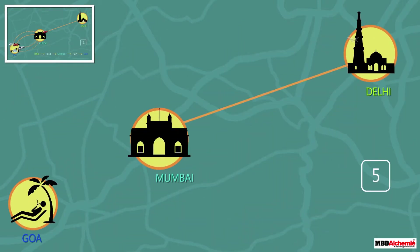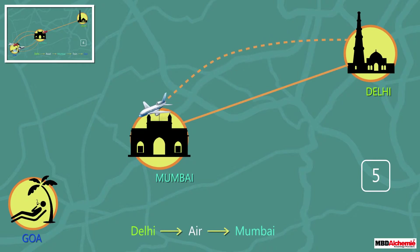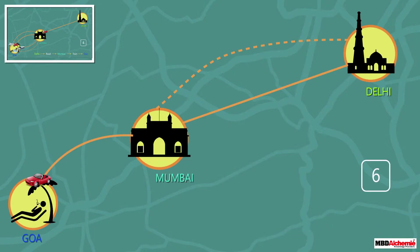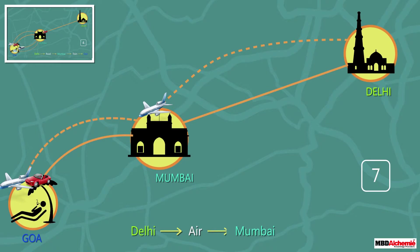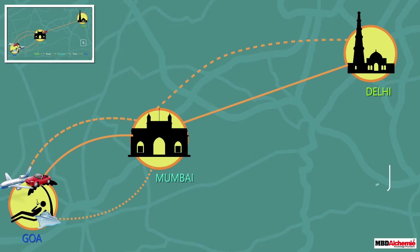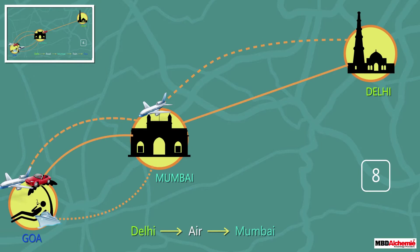The fifth way is going to Mumbai by air and then from Mumbai traveling by road to Goa. The sixth way is going to Mumbai by air and then traveling by air to Goa. The seventh way is going to Mumbai by air and then traveling by ship to Goa. The eighth way is going to Mumbai by air and then traveling by train to Goa.